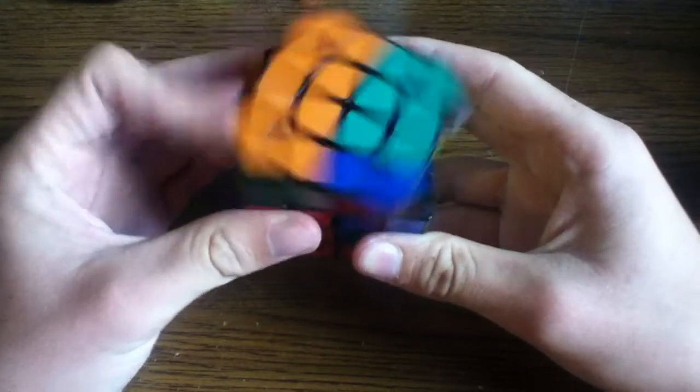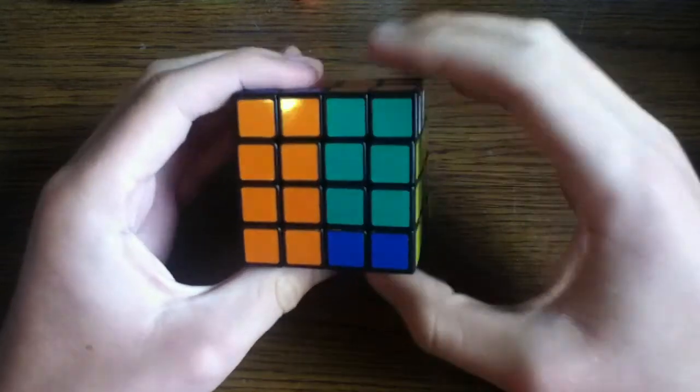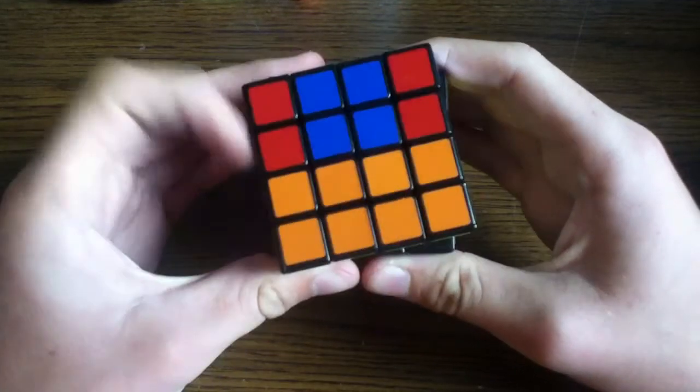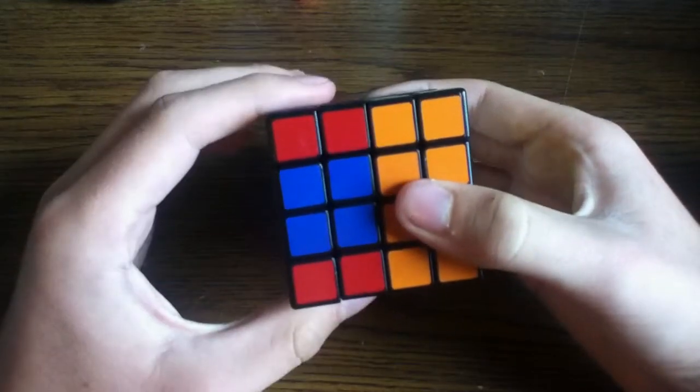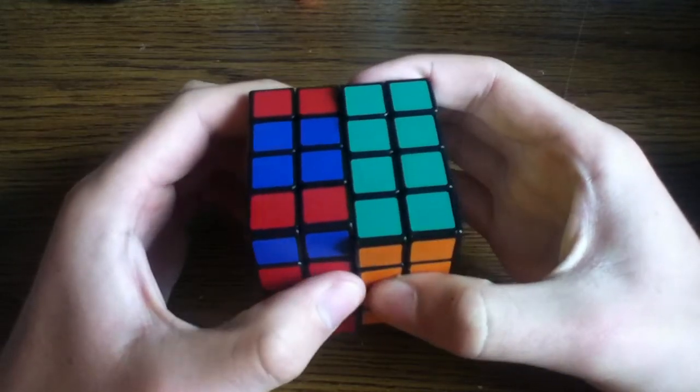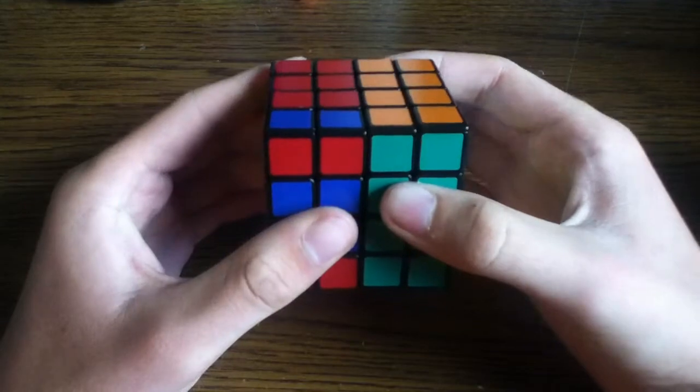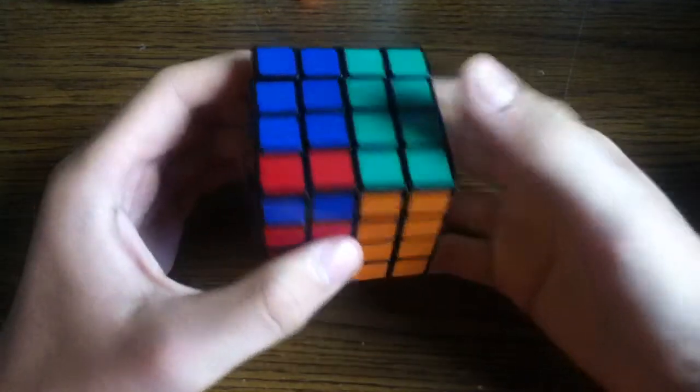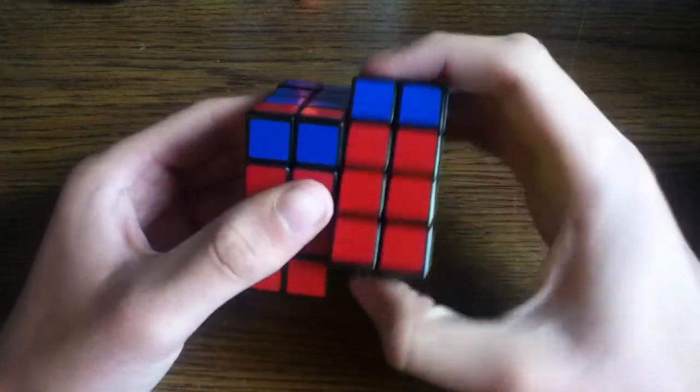Rotate the front 180 degrees. Then you rotate the right two sides up, the front 180 degrees, the left two sides up or counterclockwise. And then you turn the back side 180 degrees, and then you turn the right two sides 180 degrees.